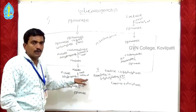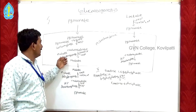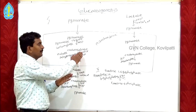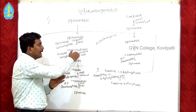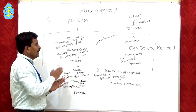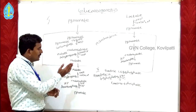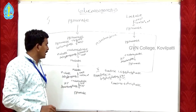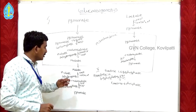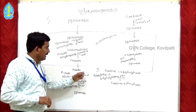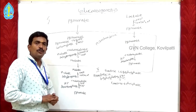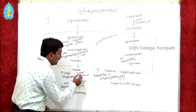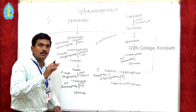Then the malate is transferred to the cytosol. In the cytosol, the cytoplasmic malate dehydrogenase enzyme converts malate back into oxaloacetate. At the time of this conversion, NAD⁺ is reduced to NADH. The NADH/NAD⁺ balance in the cytosol must be maintained.